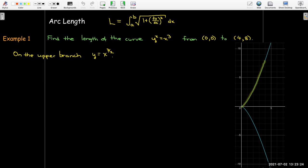So we're just looking at the upper branch, so I can just take the positive square root of both sides to get y equals x to the 3/2 power. So using the power rule, dy/dx is 3/2 x to the power of 1/2. I'll need to square that. So let me rewrite that as 3/2 radical x and square it to get 9/4 x.